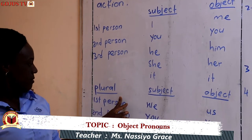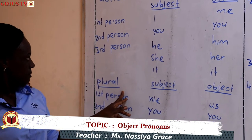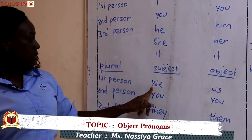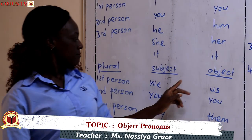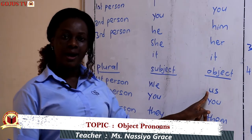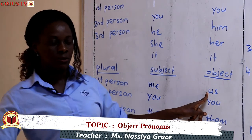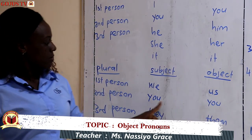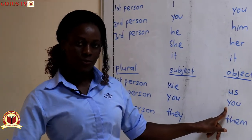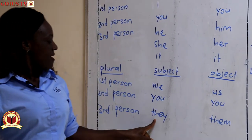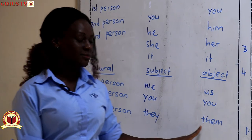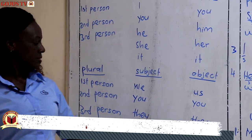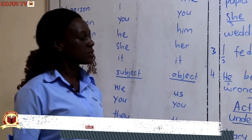For the plural forms: 'we' changes to 'us' when it becomes an object, 'you' remains 'you', and 'they' becomes 'them'. Now we are going to see these in sentence construction.